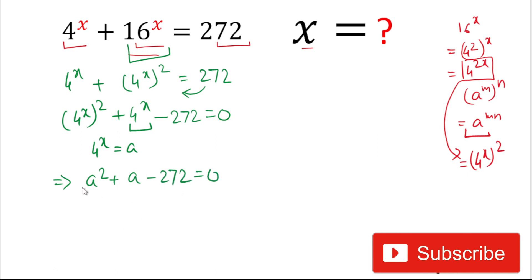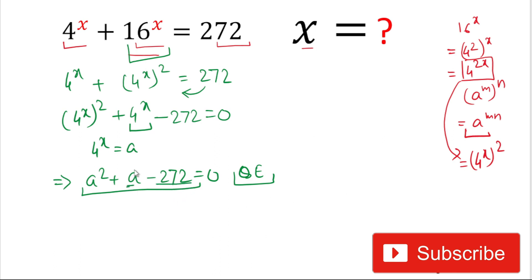If you look carefully, this is in the form of a quadratic equation. To calculate the value of a, we will split 272 and factorize it so that we get two numbers whose product is 272 and whose difference is 1.